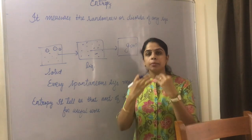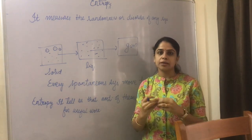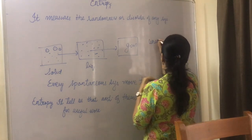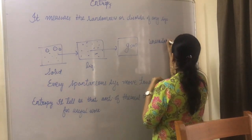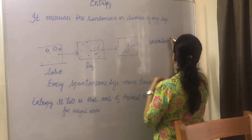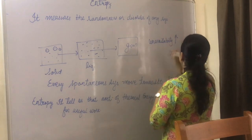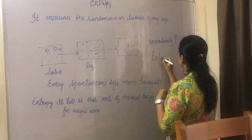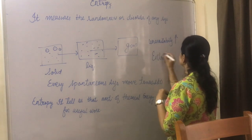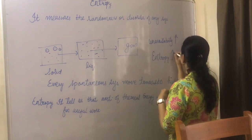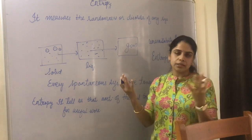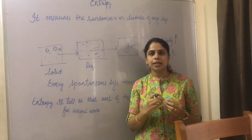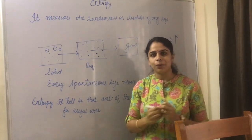Entropy measures the unavailability or degradation of energy. If the unavailability of energy of any system increases, the entropy of that system will also increase. That is what entropy is about — hope you understand the concept of entropy, thank you.